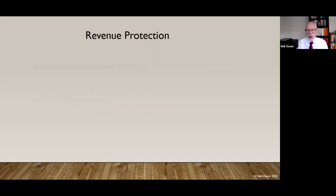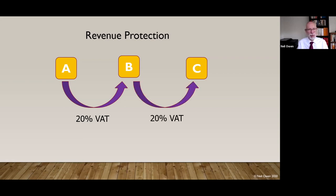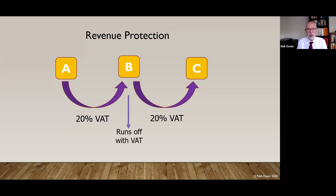A reverse charge at root is a revenue protection measure. Normally we have a chain of transactions: A sells goods or services and charges 20% VAT to B; B claims that VAT back as input tax because they'll sell on to C, also charging 20% VAT; they collect that VAT from the customer. What happens in this fraud is that having collected it from C, they then fail to submit their VAT return, disappear, and run off with the VAT. Fraudsters are now involved in the construction sector, which is why HMRC want to introduce the reverse charge.